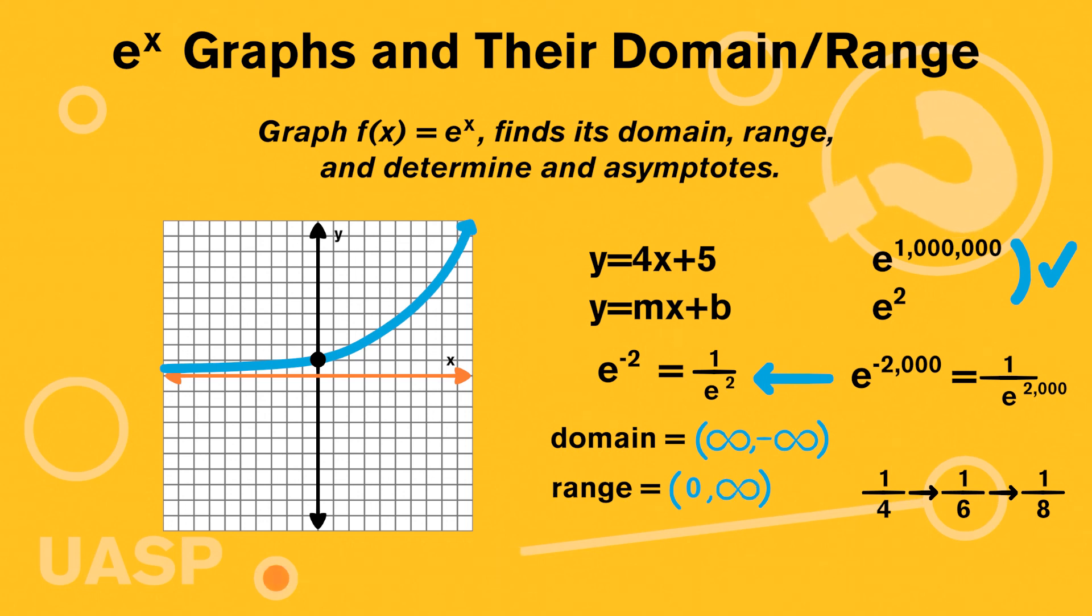And then as we said, there is an asymptote, a horizontal one at y equals zero. Because our y values will never cross zero. It will get as close as humanly possible to zero, but it will never actually become zero.